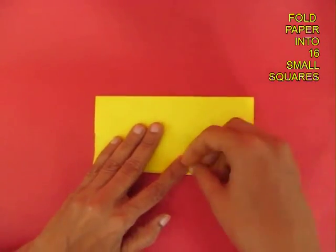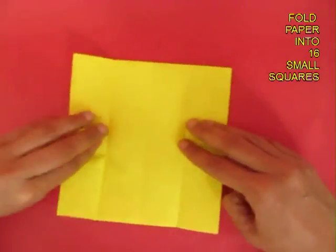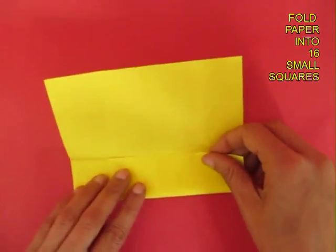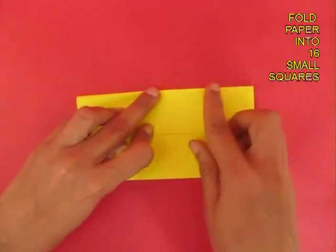This will divide the paper into 4 parts. Open the paper, rotate it by 90 degrees, and once again fold the midline and quarter lines. This will divide the paper into 16 small squares.